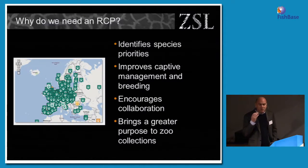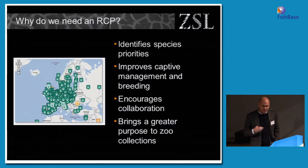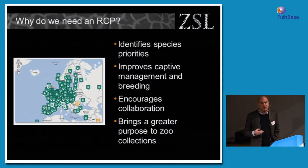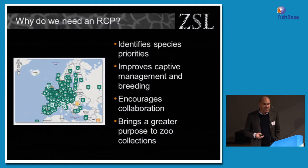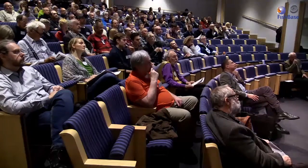Why do we need it? We need to identify priorities for species. The decline in biodiversity around the world today means we really need to start prioritizing those species that would benefit from captive management as part of their conservation. By working together, it allows an improvement of captive breeding and captive management techniques, and encourages cross-country collaboration. And it brings ultimately a greater purpose to zoo and aquarium collections — we're not just the menageries we were 30 or 40 years ago, but we have a much more important role to play.